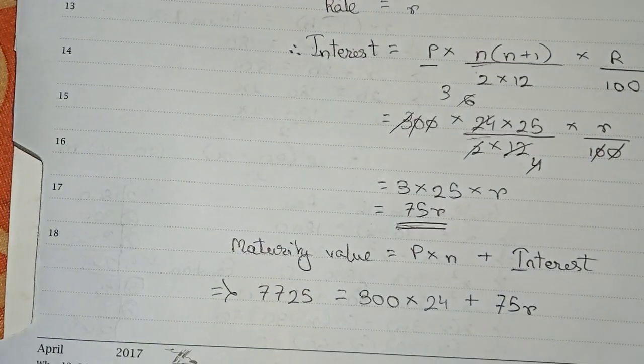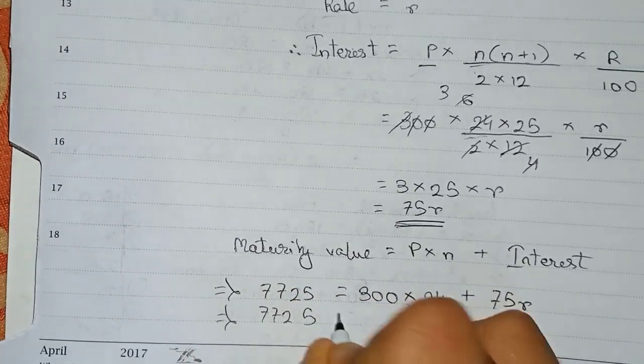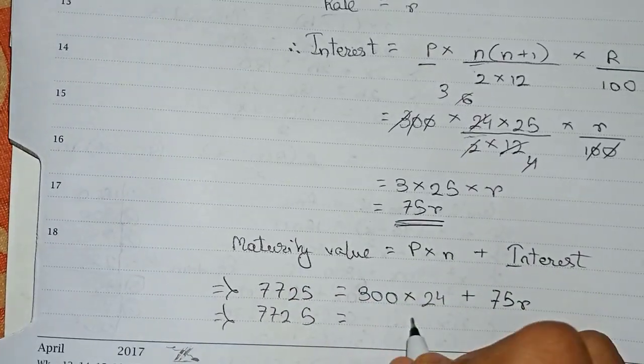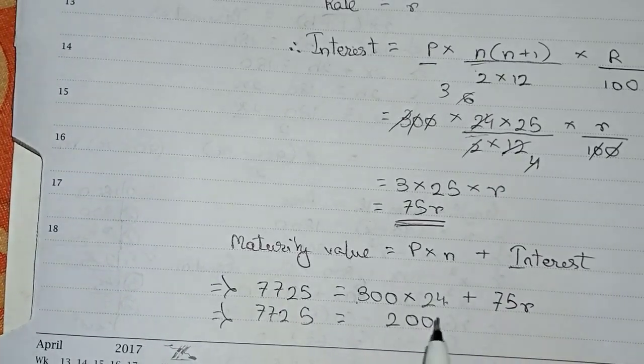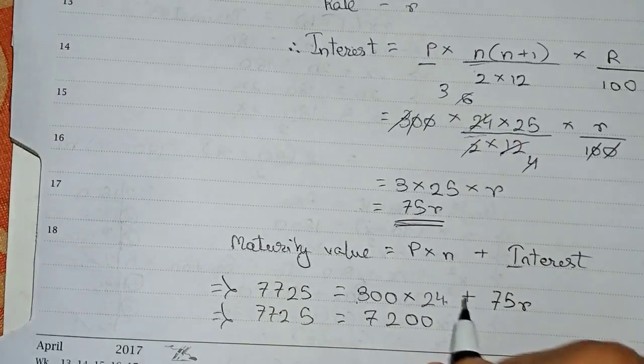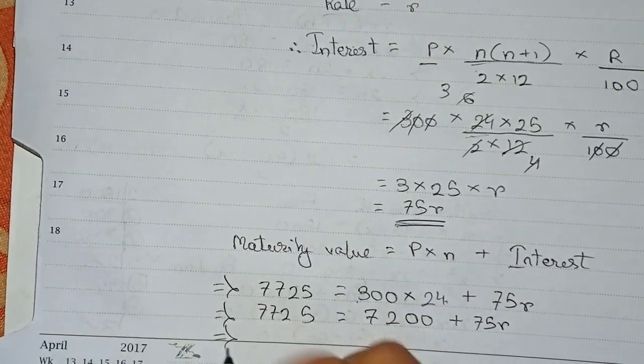So with this information we need to find out the value of r. So 7725. In the question, 3 into 24: 2 cancels, 3 fours are 12, 1 carry, 3 twos are 6, so 7200 plus 75r.